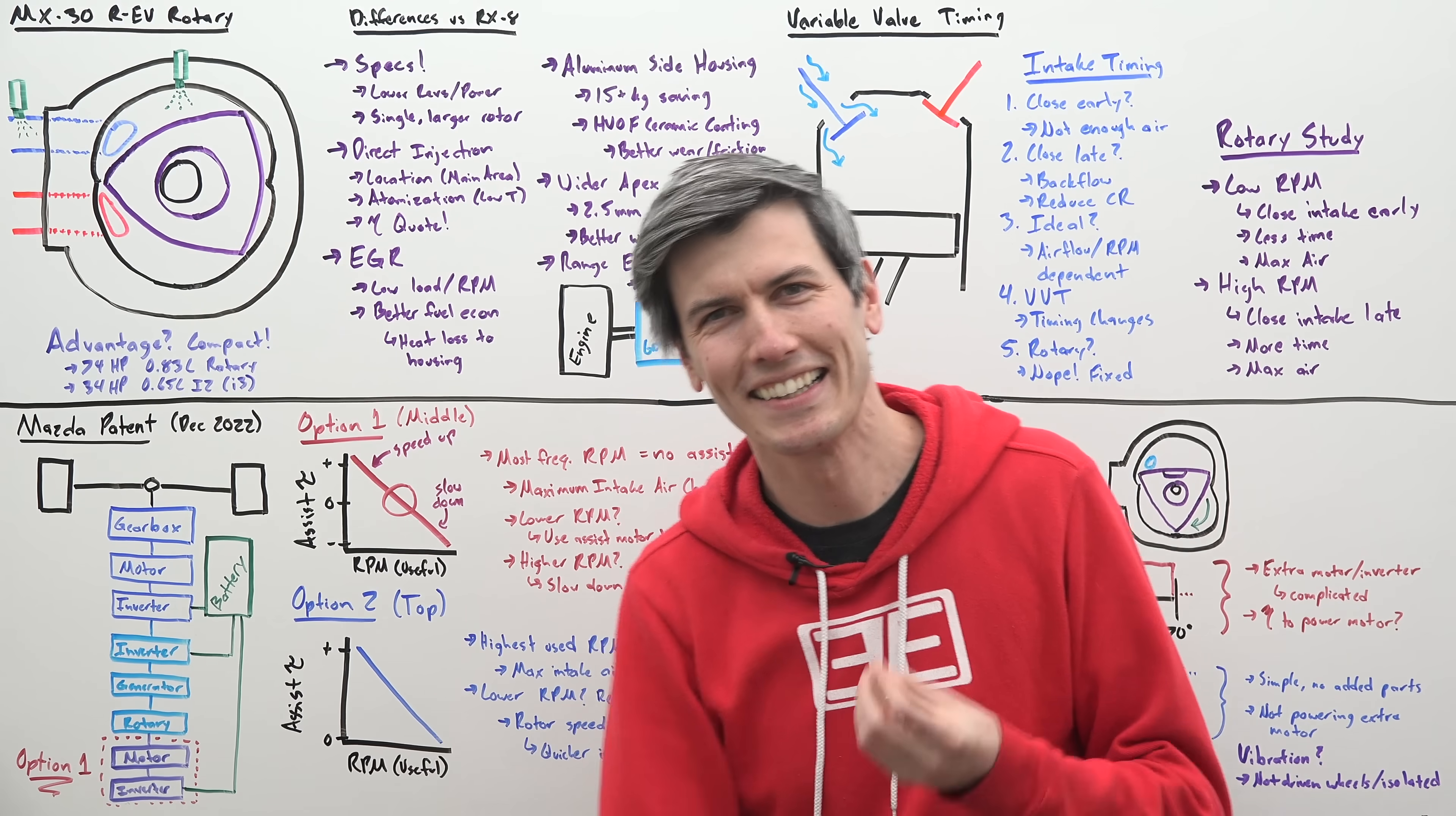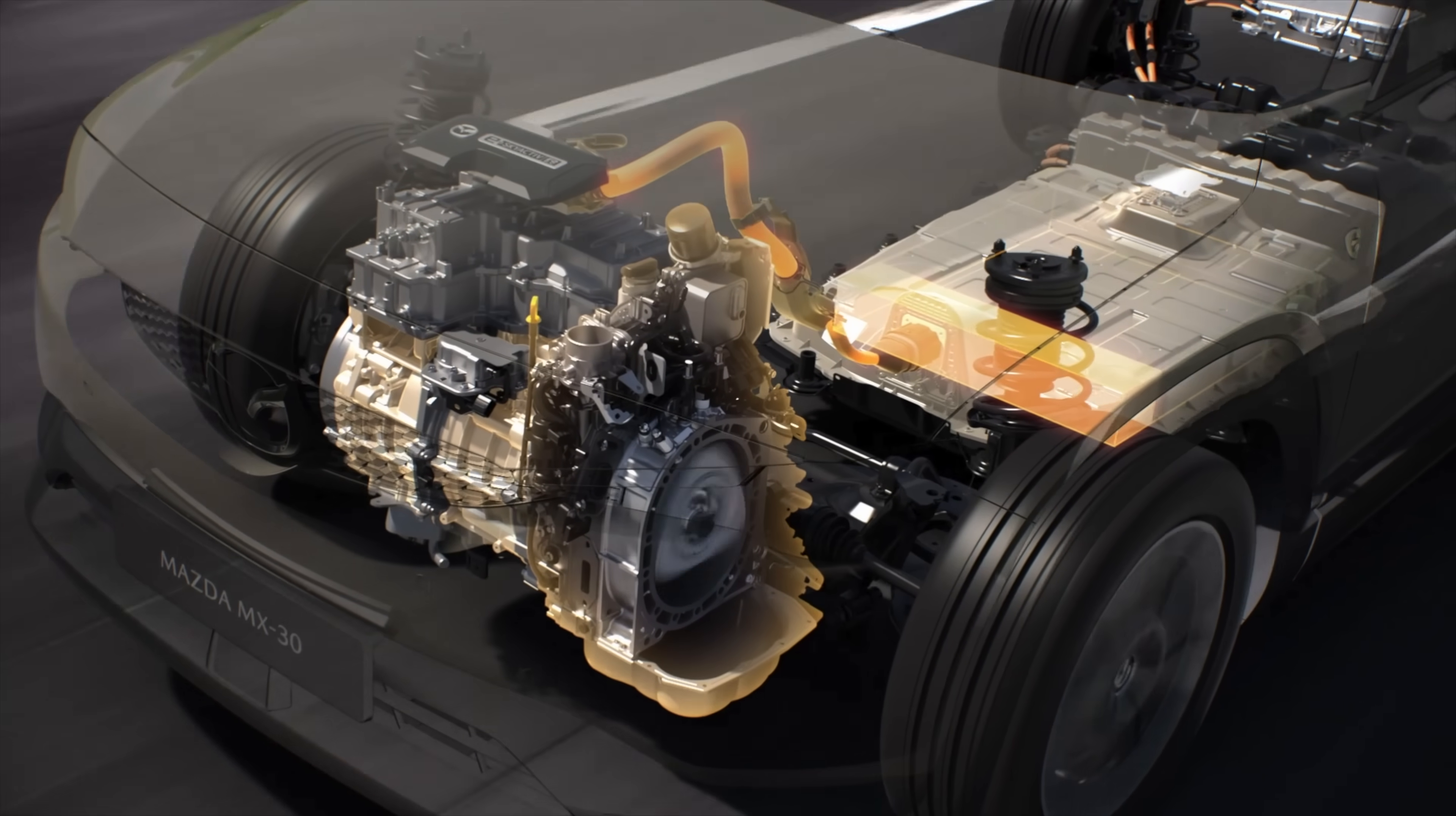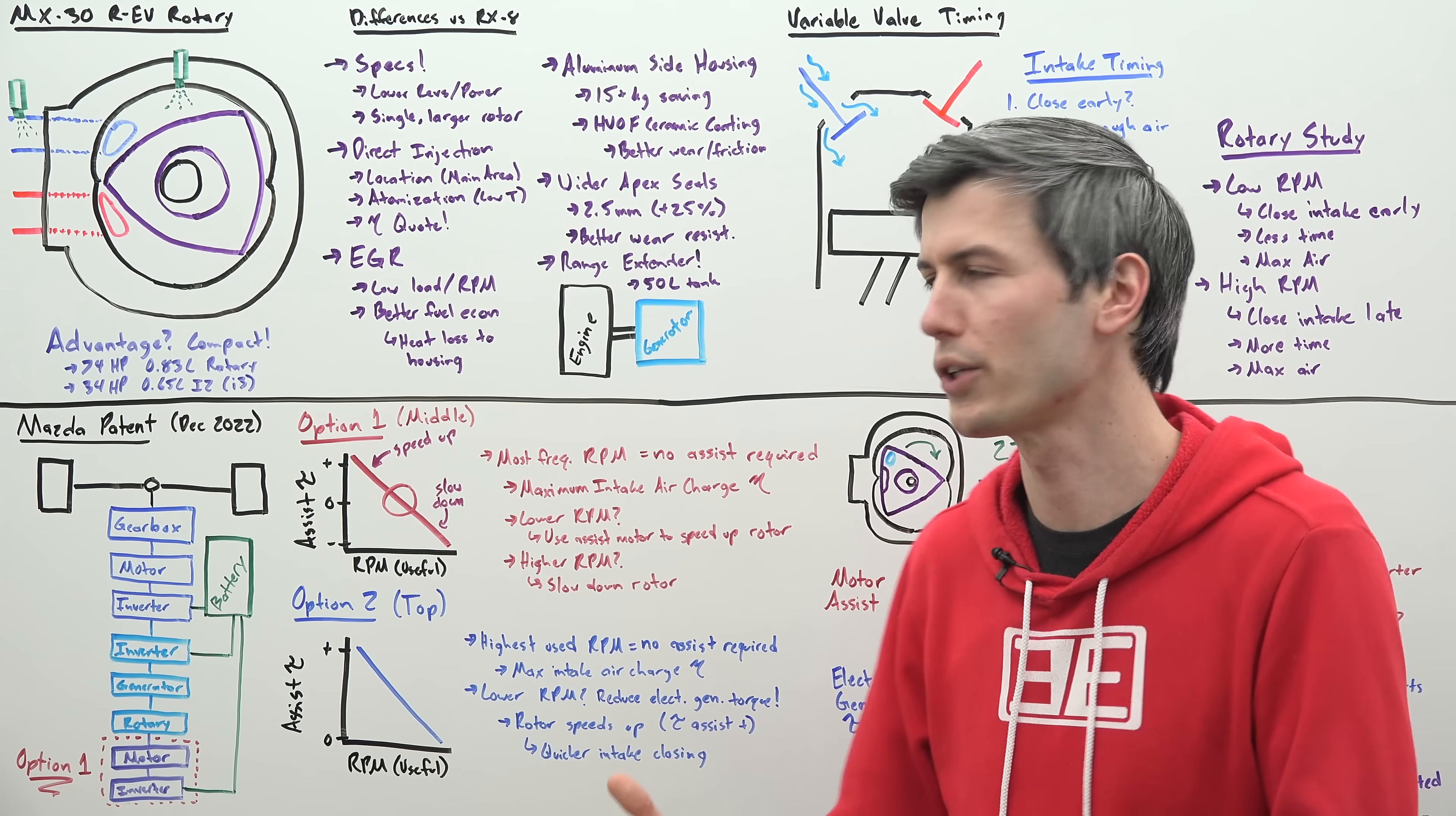Okay and the big kicker and the kind of disappointing news here of this new engine being introduced is that it's simply used as a range extender. So the engine spins up a generator that generator provides power to go to a battery or to an inverter which then powers an electric motor which is powering the vehicle. So there's no direct link between the engine and the driven wheels. So if the rotary engine is just being used to power a generator what's the point of using a rotary engine at all?